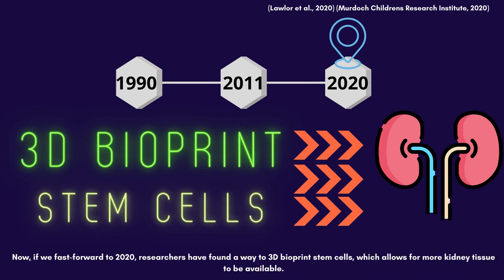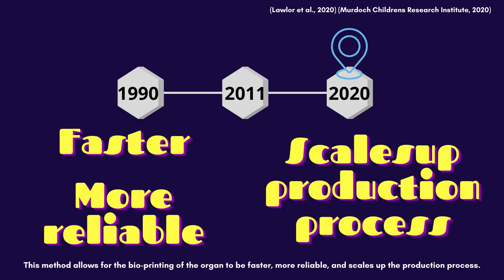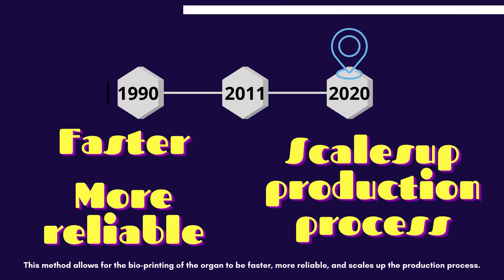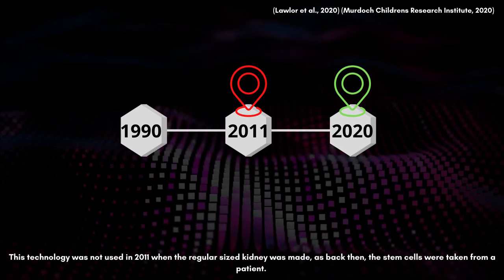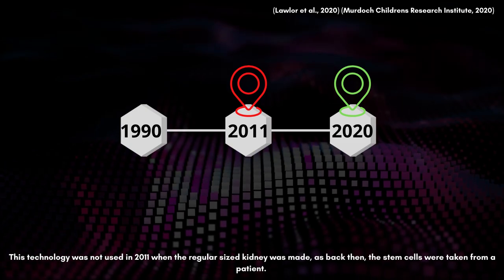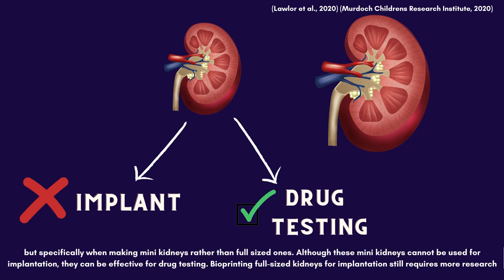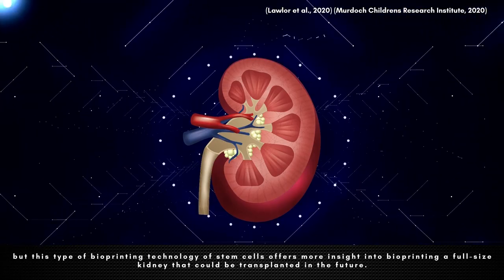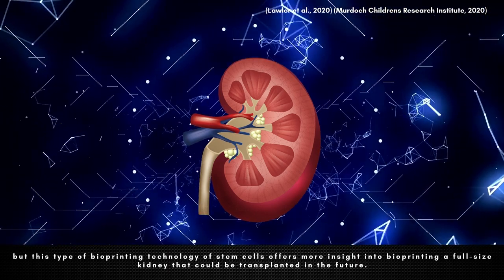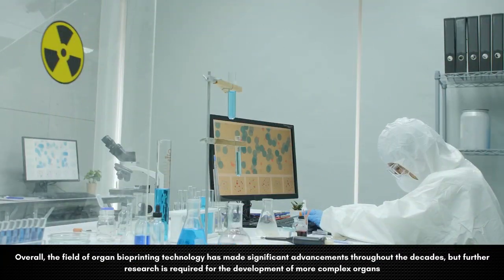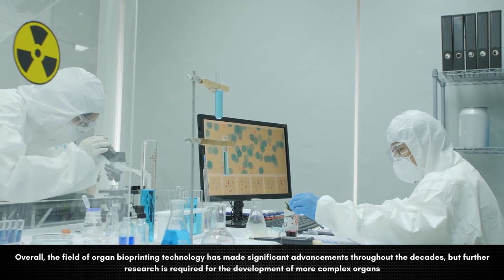Now if we fast forward to 2020, researchers have found a way to 3D bioprint stem cells, which allows for more kidney tissues to be available. This method allows for bioprinting of the organ to be faster, more reliable, and scales up the production process. This technology was not used in 2011 when the regular-sized kidney was made, as back then the stem cells were taken from a patient. 3D bioprinting stem cells has been found to be especially useful when making mini kidneys rather than full-sized ones. Although these mini kidneys cannot be used for implantation, they can be effective for drug testing. Bioprinting full-sized kidneys for implantation still requires more research, but this type of stem cell bioprinting technology offers more insight into bioprinting a full-sized kidney that could be transplanted in the future.